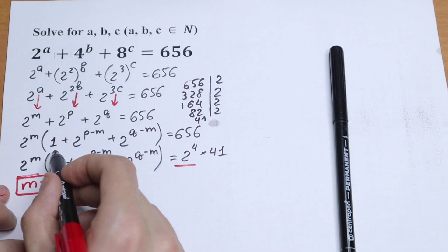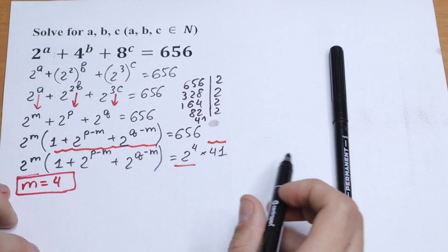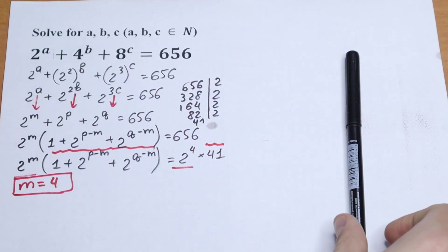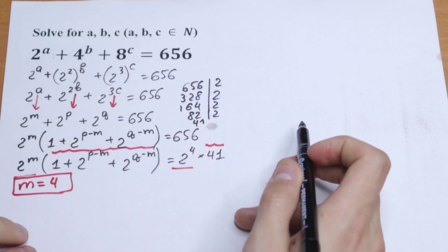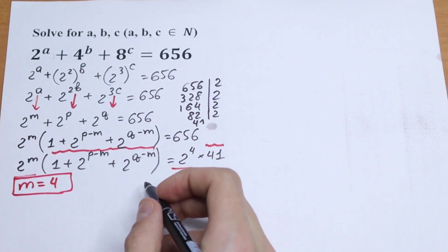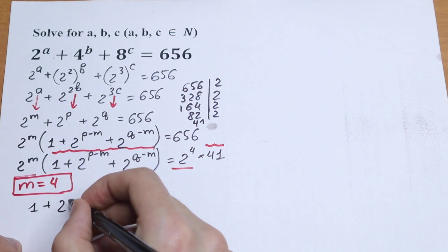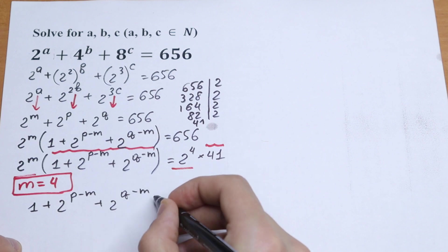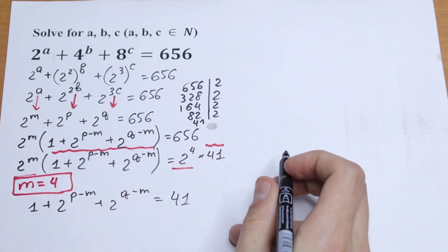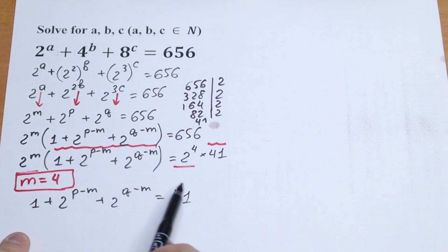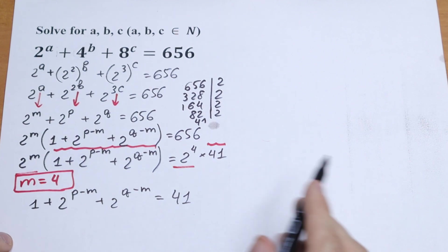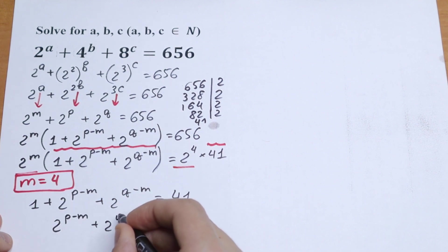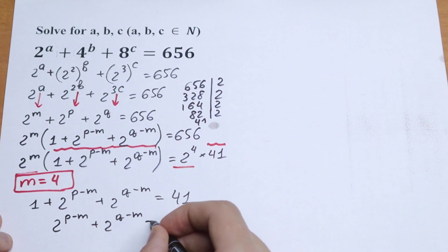The parentheses must equal 41. So: 1 plus 2 to the power (p minus m) plus 2 to the power (q minus m) equals 41. Bringing the 1 to the right side, we get 2 to the power (p minus m) plus 2 to the power (q minus m) equals 40.